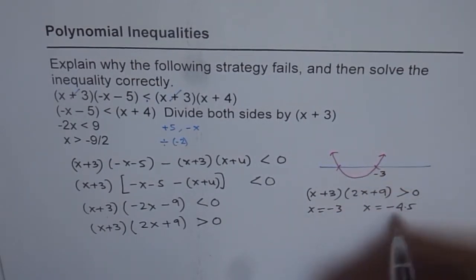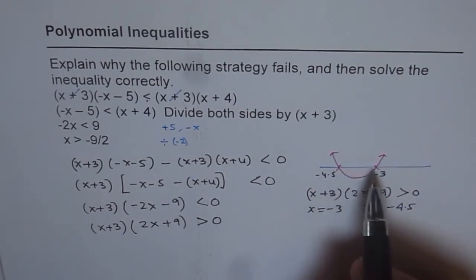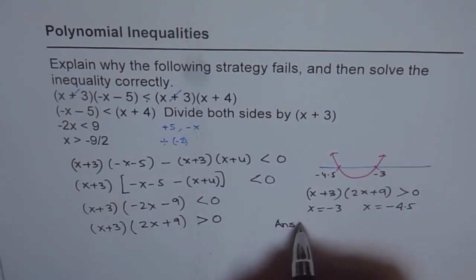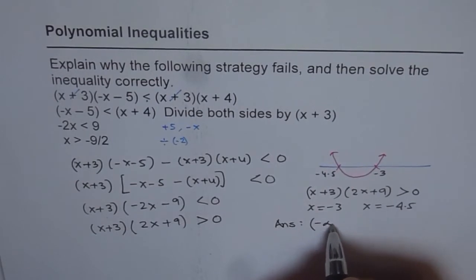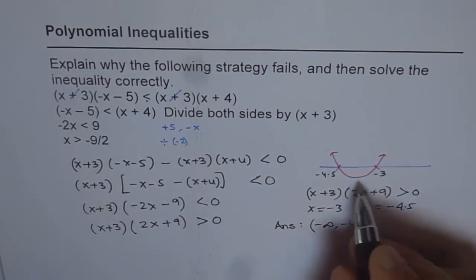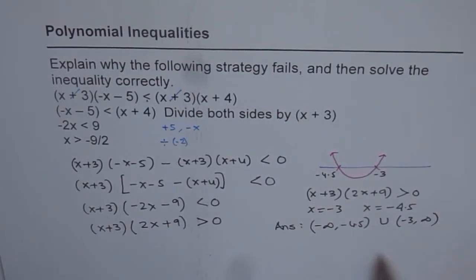So this is your minus 3 and then here we have minus 4.5. When is it greater than 0 or positive? So the answer is, you can see from the graph and write down from minus infinity to minus 4.5, and it is also greater than from minus 3 to positive infinity. So that is your answer set.